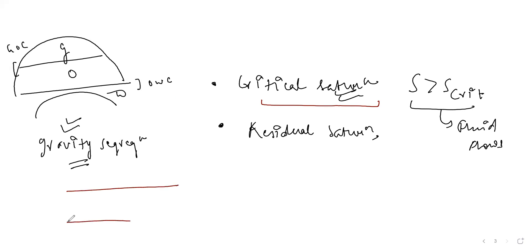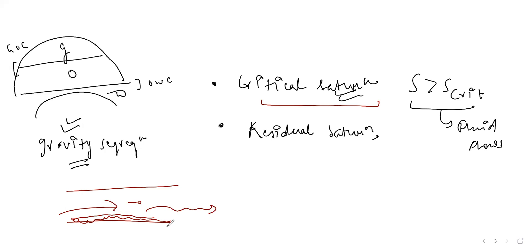Imagine a pipe: if you only have a little fluid, it wets the surface but won't flow. Add more and more, and eventually it starts flowing. This is a crude definition for now — a deeper treatment of critical saturation will come when we cover capillary pressure and interfacial tension.